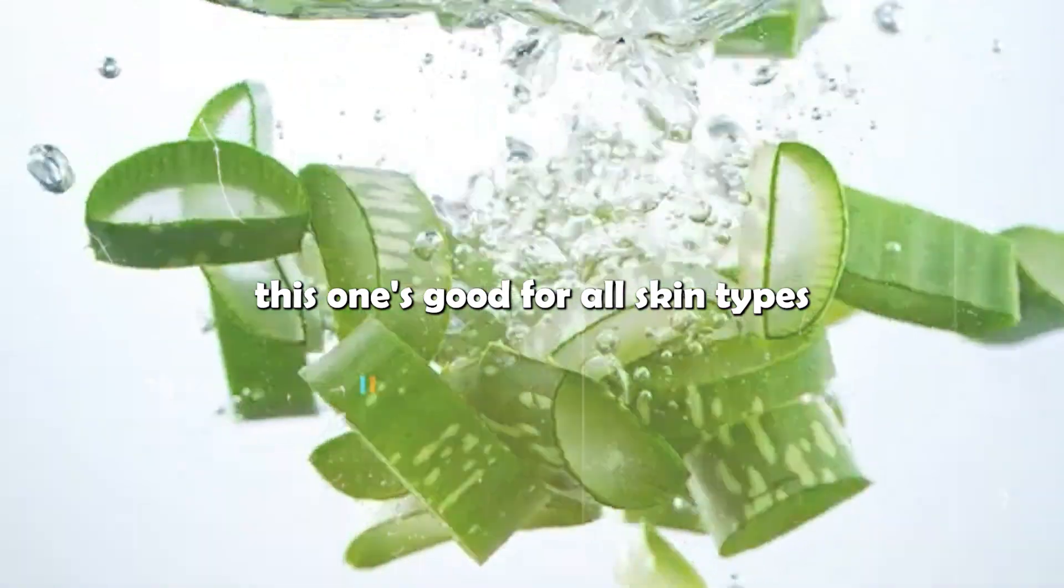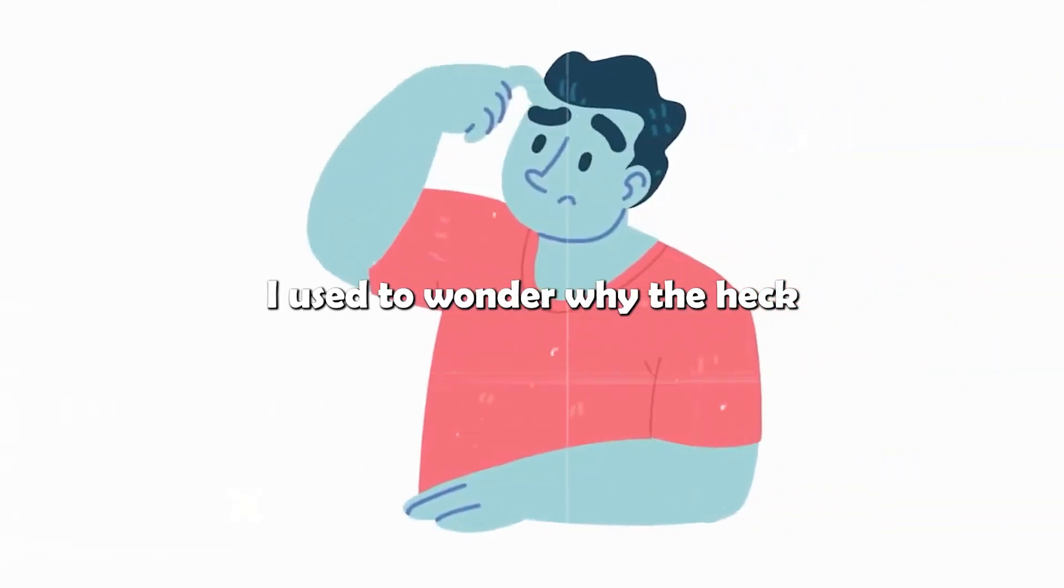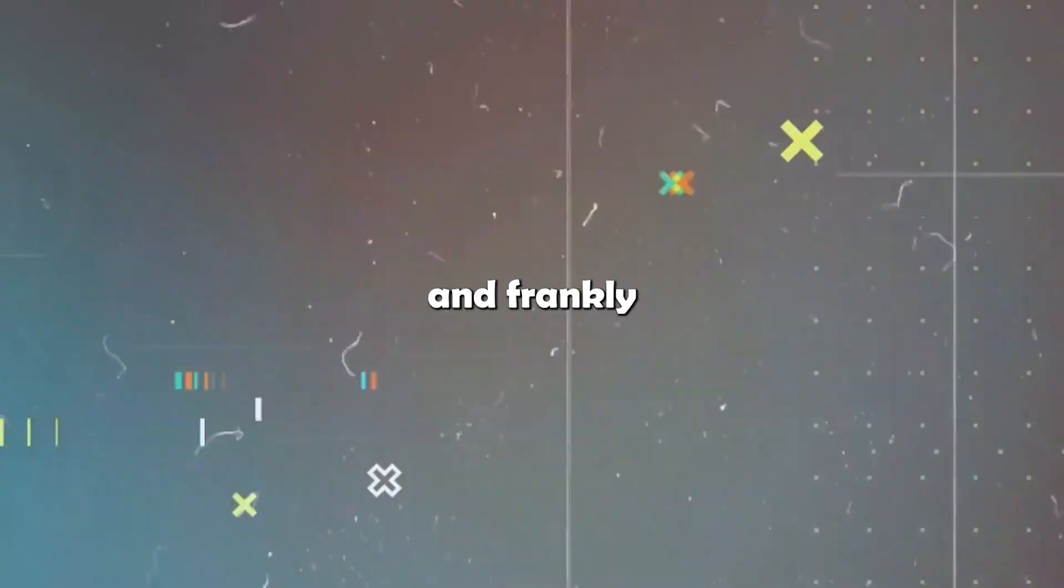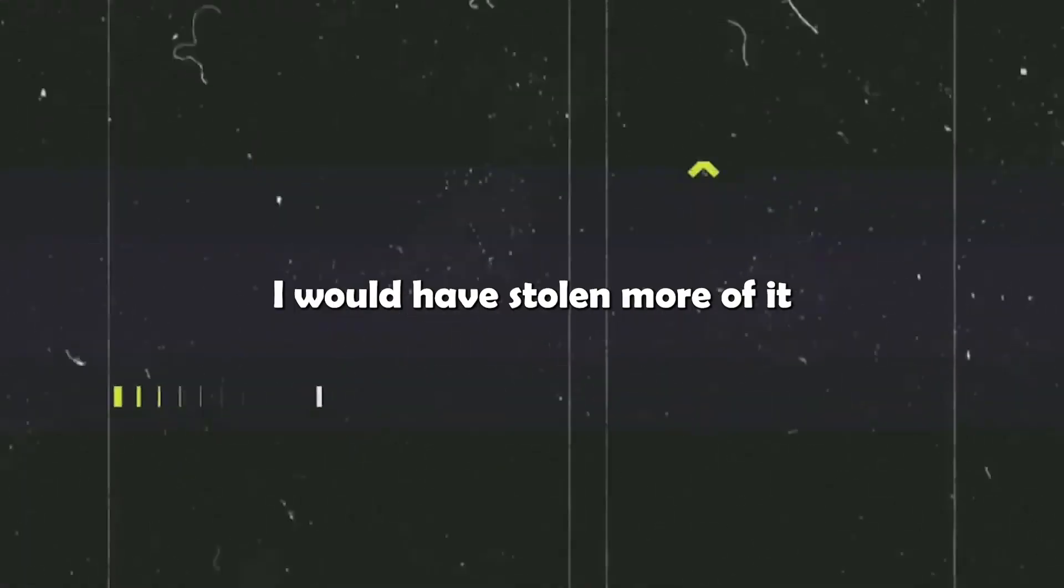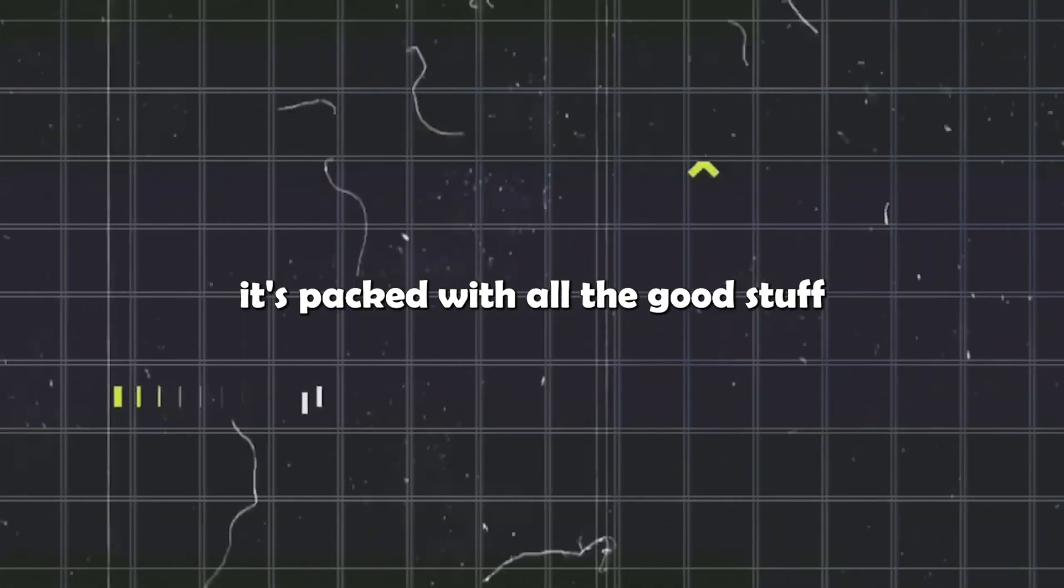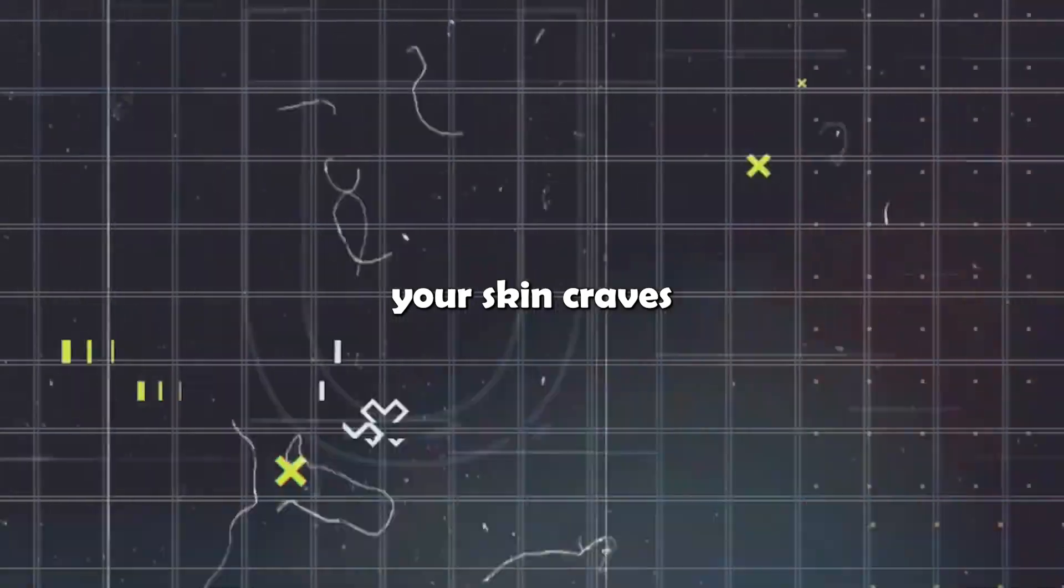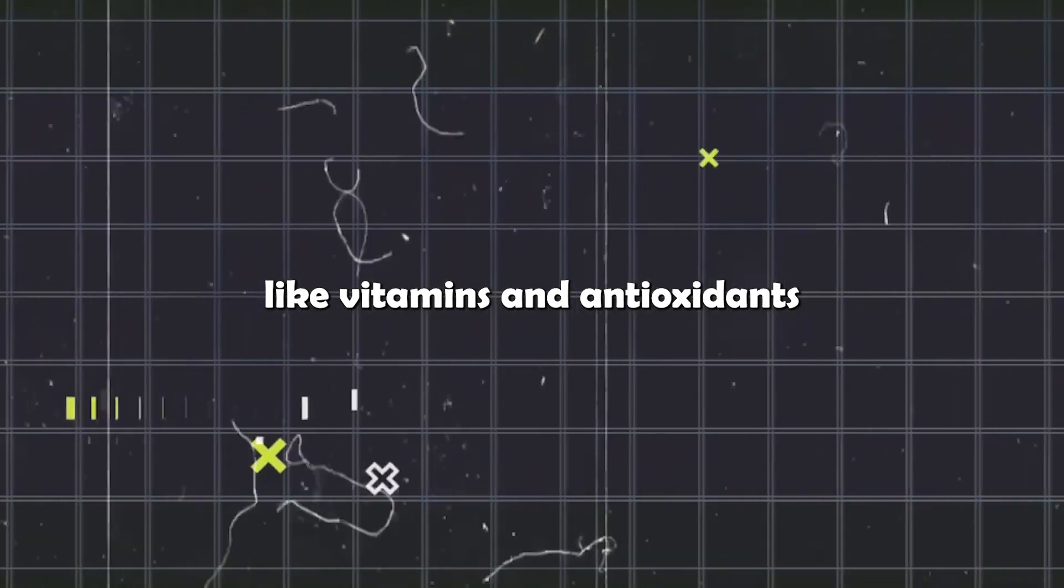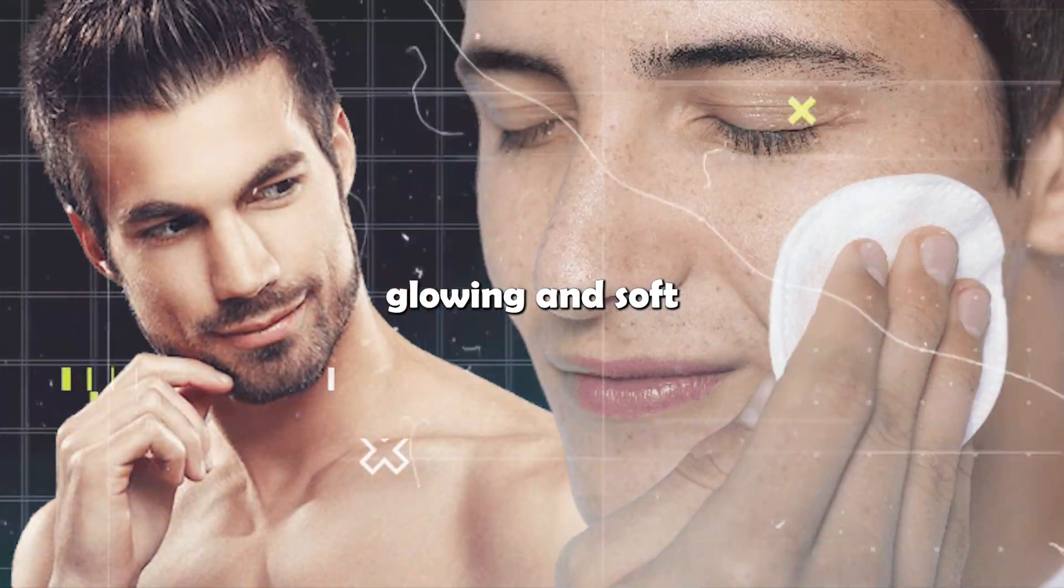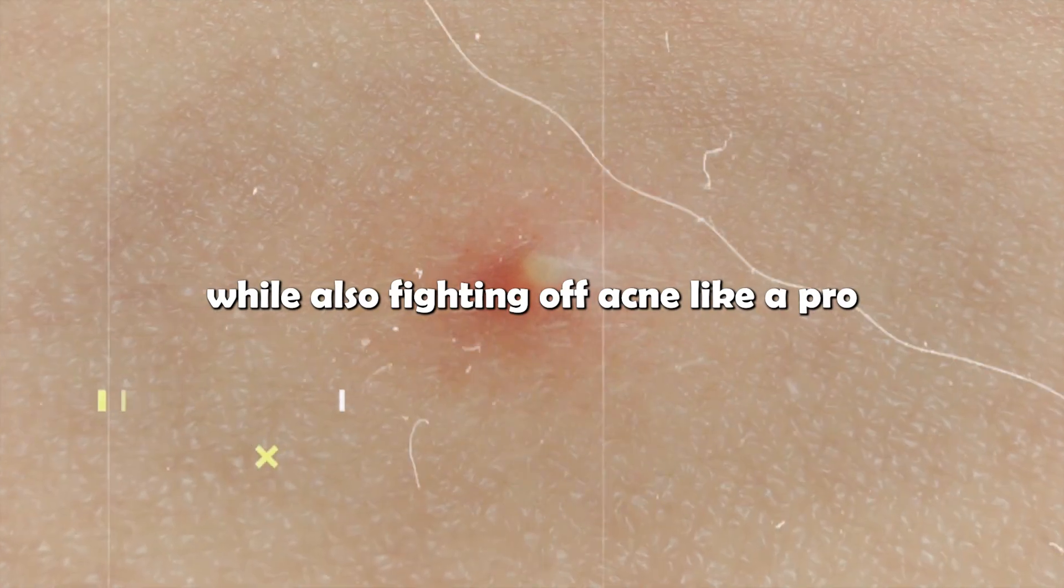This one's good for all skin types. I used to wonder why my sister had a bunch of aloe vera around the house. And frankly, if I knew what I did now, I would have stolen more of it. Aloe vera is like the MVP of skin care. It's packed with all the good stuff your skin craves, like vitamins and antioxidants. It's not just hype. Aloe vera keeps your skin glowing and soft while also fighting off acne like a pro.